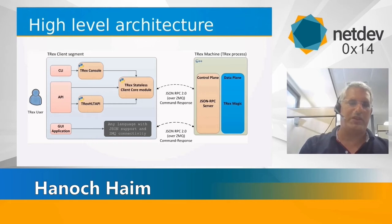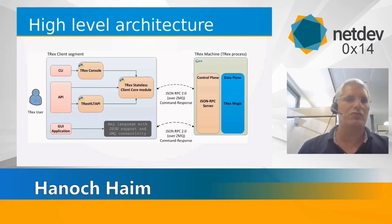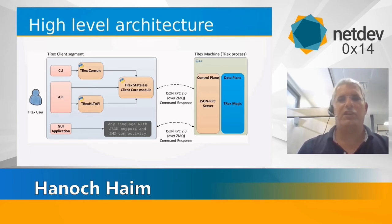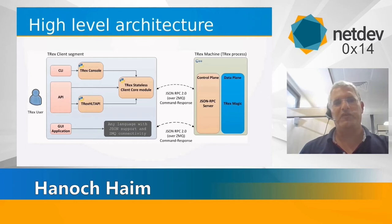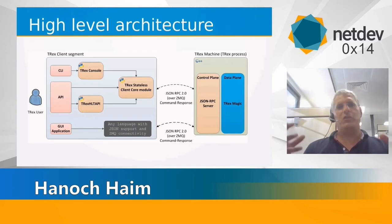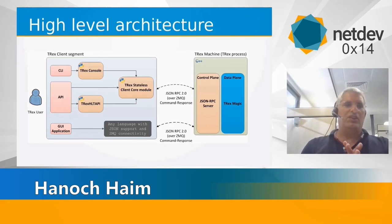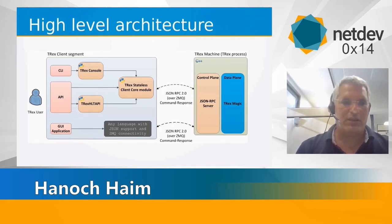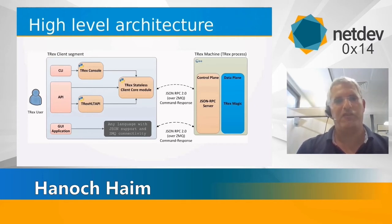The left side is the control plane. It's a Python wrapper on top of the JSON-RPC, and you can control and automate traffic scenarios — for example, load the profile, start the traffic, get statistics, et cetera — using an API. Everything is built on top of this API. We also have a utility called TRex console that we use as developers to run scenarios, and another GUI built by a different group.